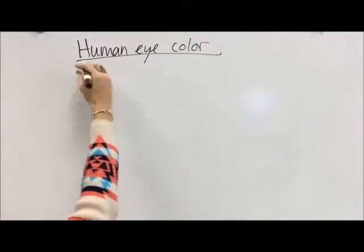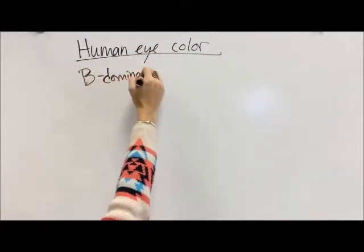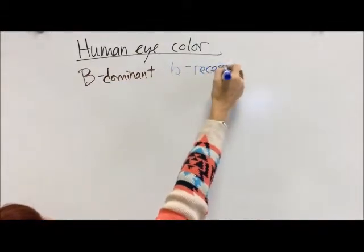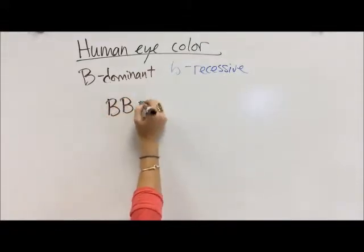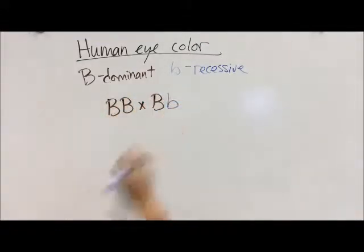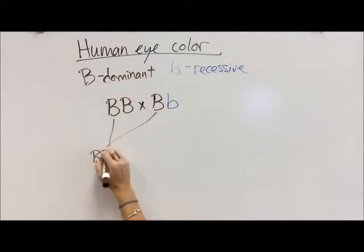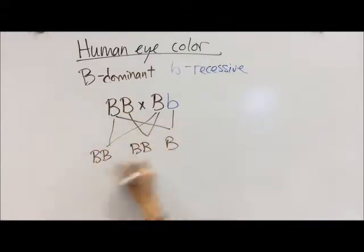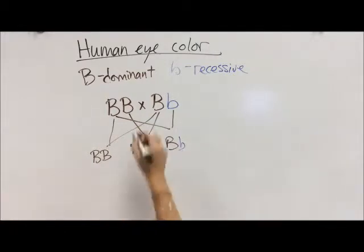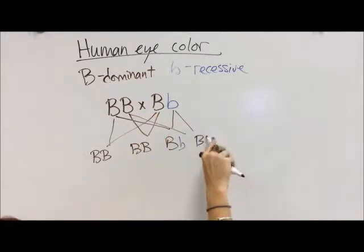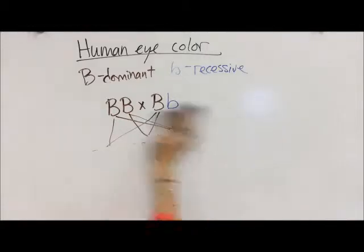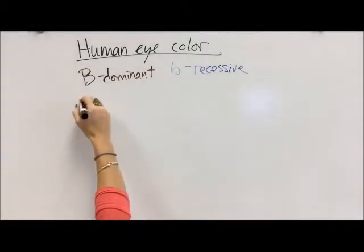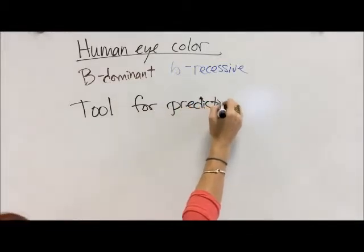Human eye colors are a similar thing. Big B is dominant for brown and little b is recessive for blue. We can have many situations: a big B big B parent with a big B little b parent can have a big B big B child, or big B little b children. We wind up with 50% big B big B and 50% little b big B — it gets real messy real fast.